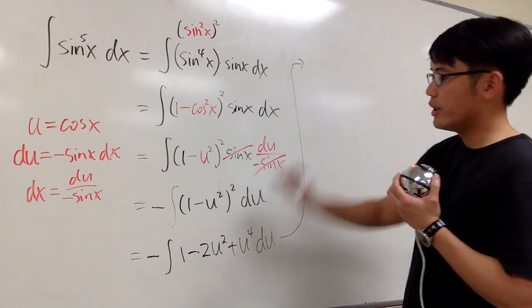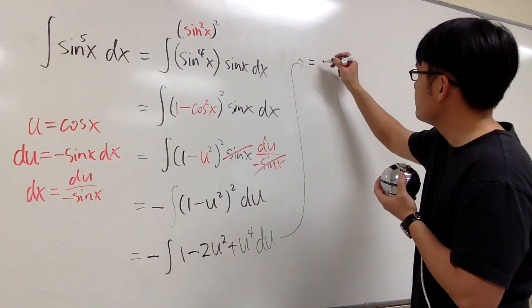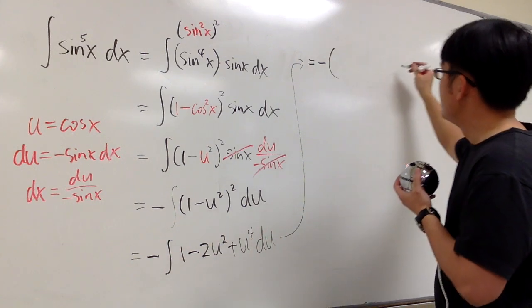And then we are ready to integrate. And then let me just account for the negative. This will be negative. And open the parentheses. I'll put down the result in some of the parentheses.